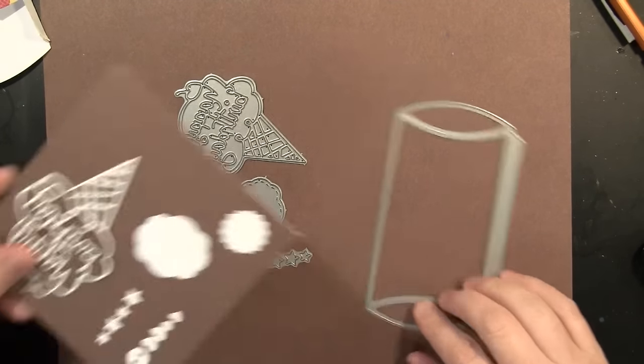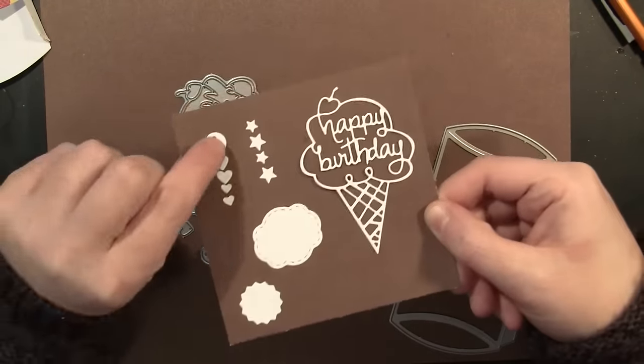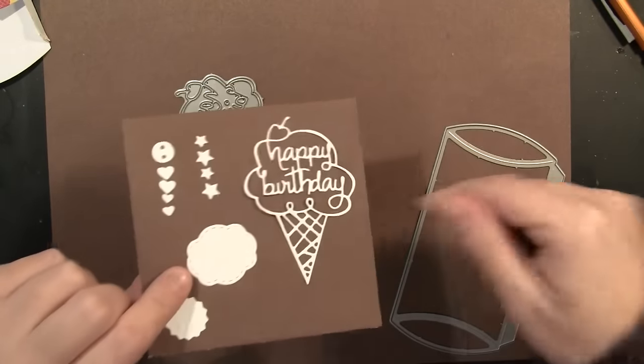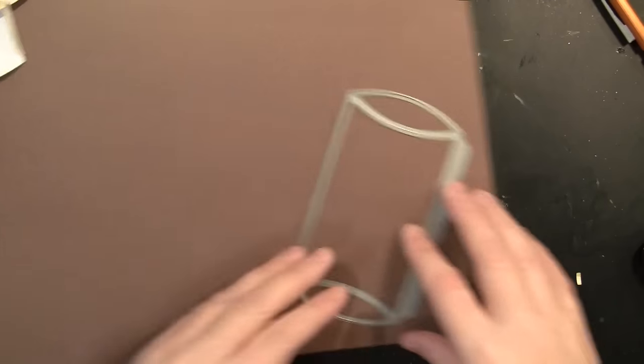And once those additional pieces are cut, here's what they look like. And those little hearts and stars are really fun. If you wanted to put those in a shaker card, you could just cut several times through and have the interior pieces for your shaker card.